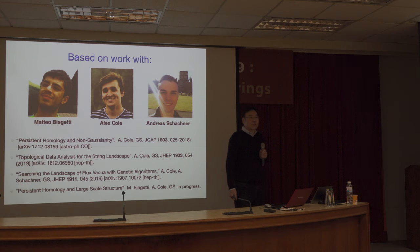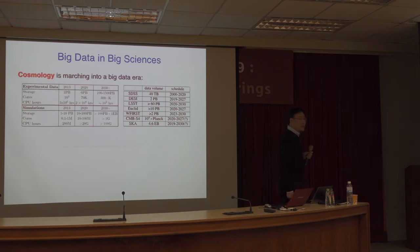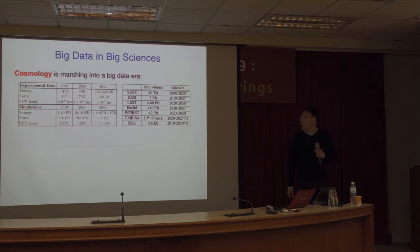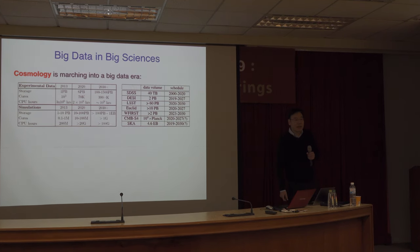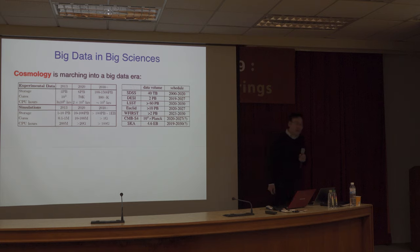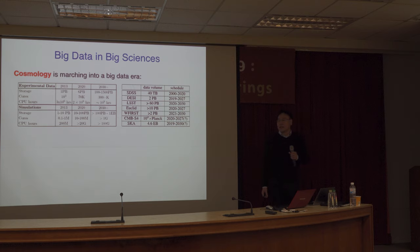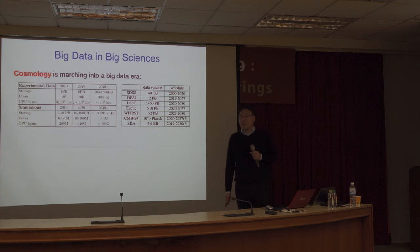Without a doubt, cosmology is merging into a data-rich era. Astronomical surveys are producing an exponentially increasing amount of data in the quest to understand the origin of cosmic structures. The physics we can extract from these surveys combined is potentially enormous — including the absolute mass scale of the neutrinos, the initial conditions of the cosmic structures laid out by the Big Bang, the time evolution of dark energy, and the distribution of dark matter.